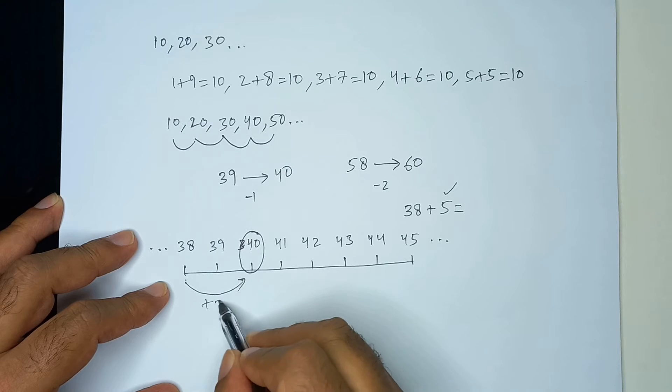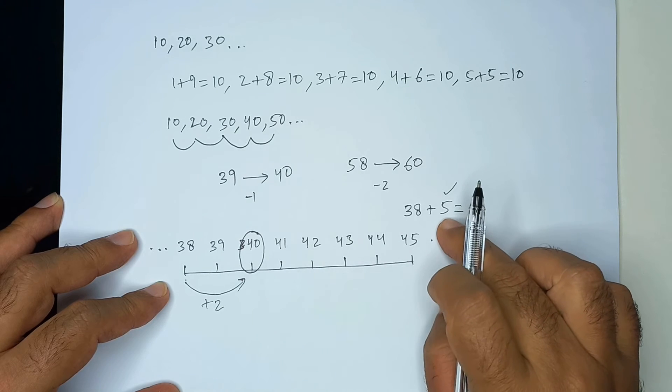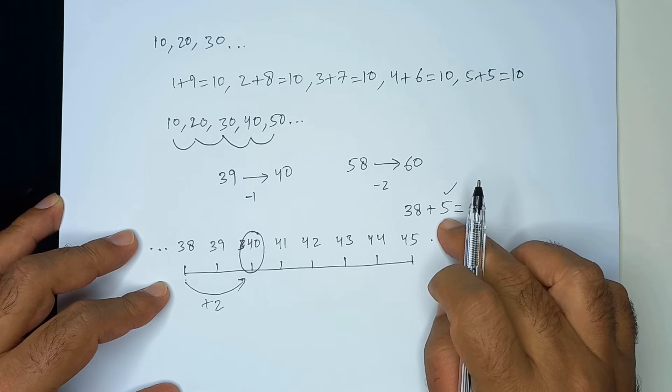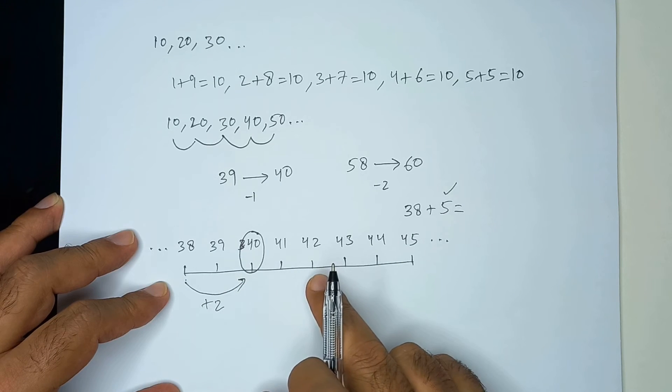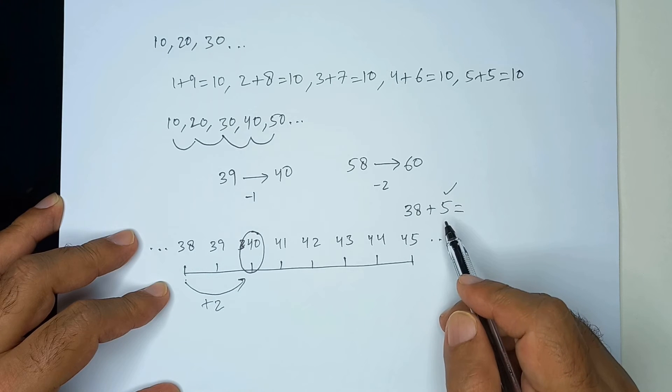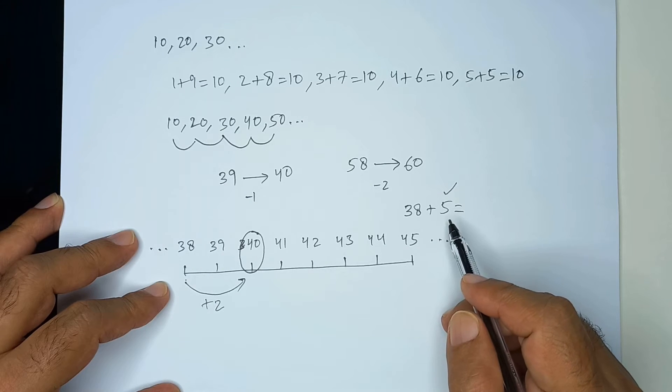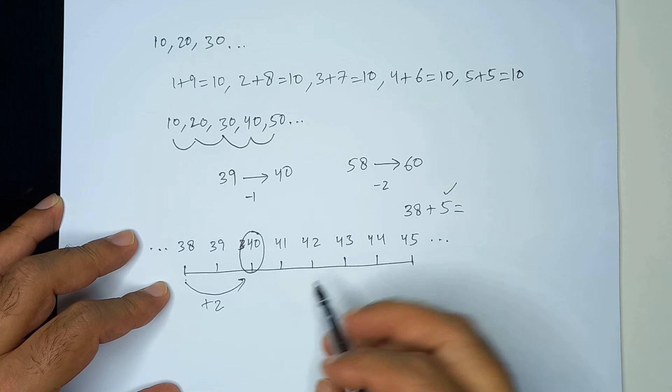So actually we added 2, but this 2 we took from this 5, right? So, when we are at 40, we have used that 2. Now, out of those 5 we have 3 more to add on.